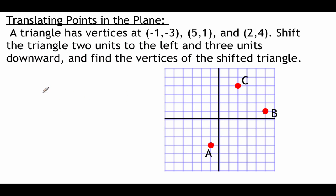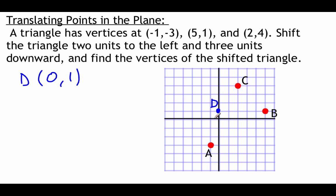The last thing we're doing is translating points in the plane, which just means moving points around. We're given a triangle with vertices at (negative 1, negative 3), (5, 1), and (2, 4), and we're going to shift it 2 units to the left and 3 units down. There are two ways to approach this. One way is by looking at the picture — working with point C, we move 2 units to the left and then 3 units down, and we can call this new point D. So point D ends up at (0, 1).